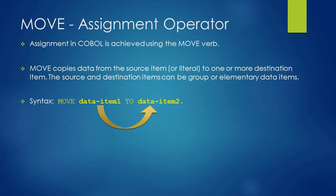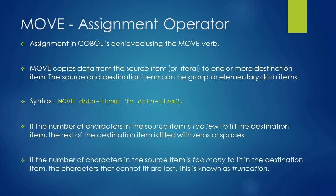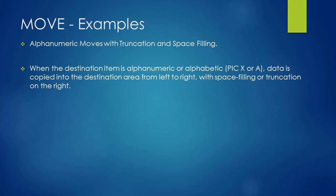If the number of characters in the source item is too few to fill the destination item — for example if variable-1 has very few characters compared to the second variable you are moving data into — then the rest of the destination item will be filled with zeros or spaces based on the type of the data item. Similarly, if the number of characters in the source item is too many to fit in the destination item, the characters that cannot fit are lost. This is known as truncation.